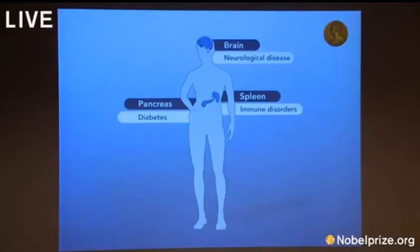The vesicle transport system is critical for a variety of physiological processes, ranging from signaling in the brain to release of hormones to release of immune cytokines. Without this wonderfully precise organization, the cell would lapse into chaos.